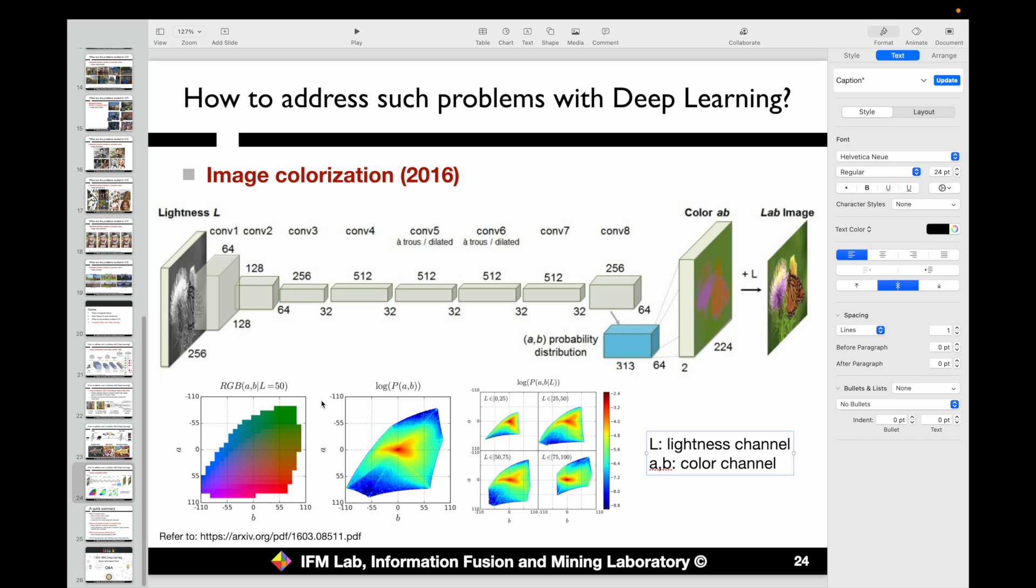Following some distributions, we can represent the probability distribution of AB given L, as shown here. In other words, for some lightness values, we can find regions or colors which are more likely corresponding to the lightness of this pixel, because this lightness is already known given the inputs.